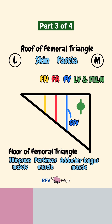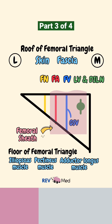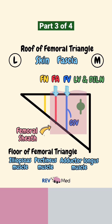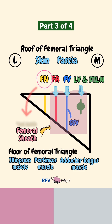Also remember this: the structures of the femoral triangle are covered by the femoral sheath. It covers the femoral artery, femoral vein, the empty space, and the lymph nodes. The femoral nerve is not inside the sheath.